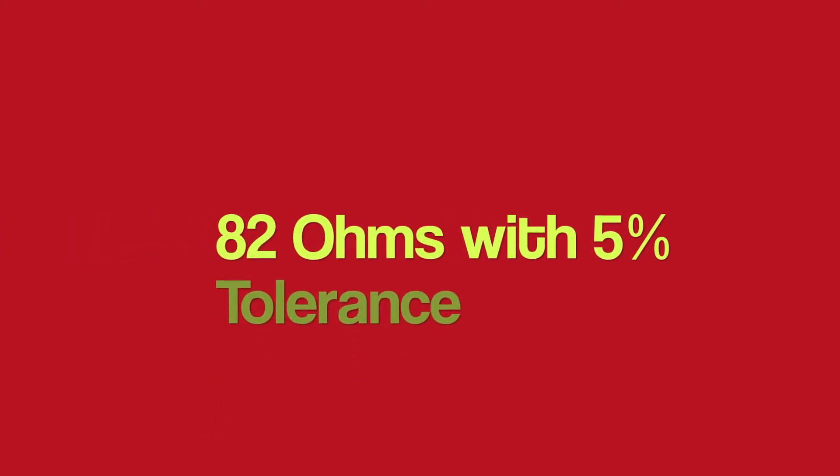This band is slightly different due to the fact that it is 5 colors. So red is 2, blue is 6, brown is 1, and black is 0. Gold is our 5%, so we have a 261 ohm resistor.